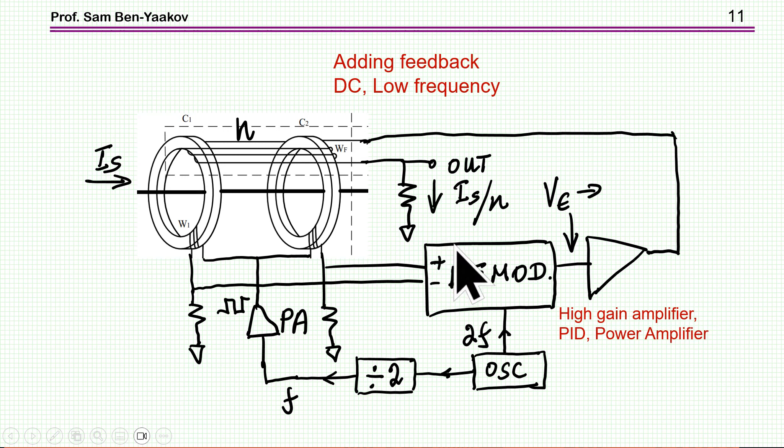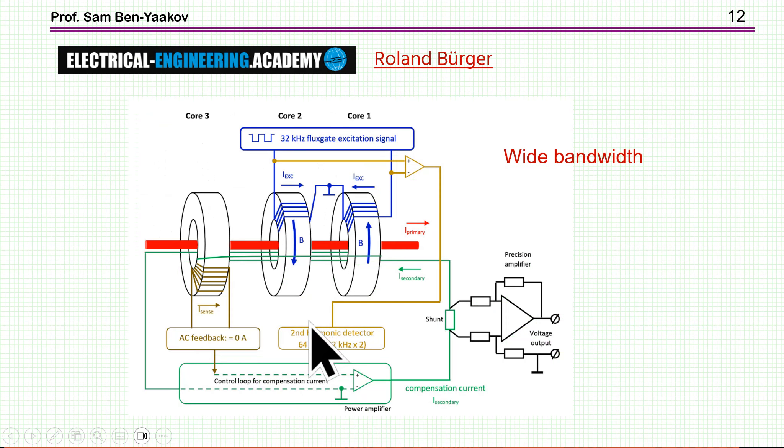However, the main problem with this system is that the bandwidth is rather limited, because this operation of feedback requires an amplifier which has a limited bandwidth, and also this demodulation and the filtering also limits the bandwidth. So a better solution which can provide much higher accuracy and stability in bandwidth is using three rings or three cores. These two are operating as before. The third one is used in order to boost the bandwidth. So let's see how does it work.